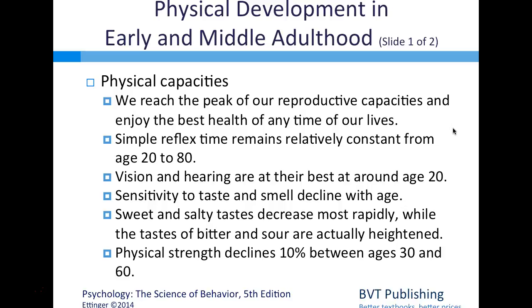In early and middle adulthood, we reach the peak of our reproductive capacities and enjoy the best health of any time in our lives. Simple reflex time remains relatively constant from age 20 to 80. Vision and hearing are at their best around age 20. Sensitivity to taste and smell declines with age—sweet and salty tastes decrease most rapidly, while bitter and sour are heightened. Physical strength declines about 10% between ages 30 and 60.